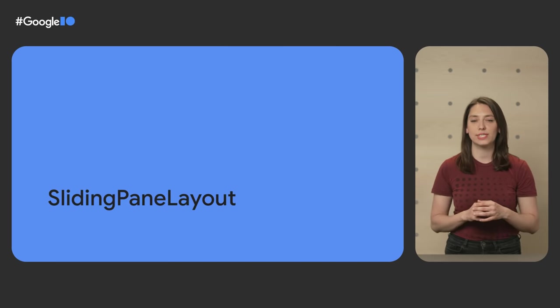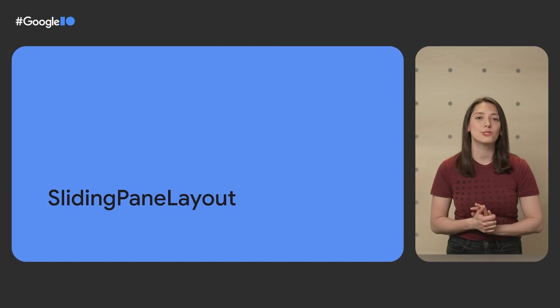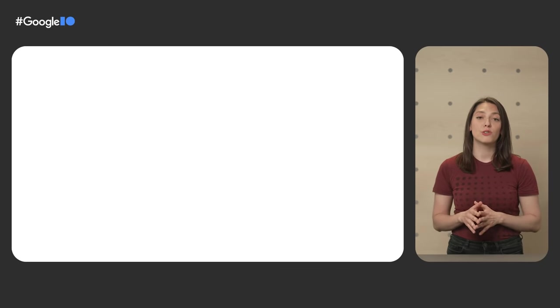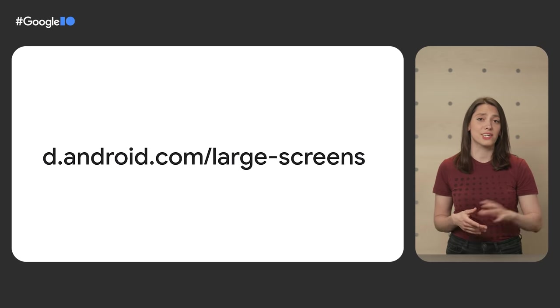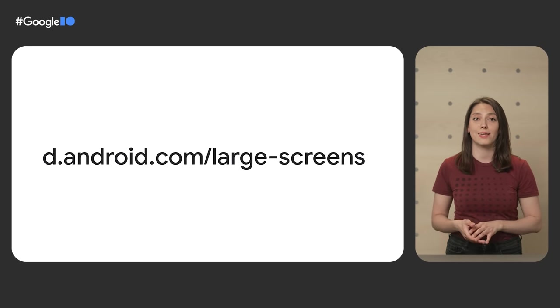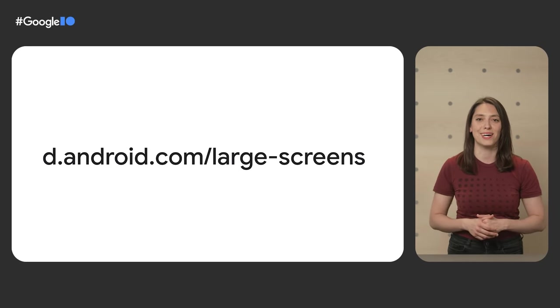A great first step for large screens is using sliding pane layout to make better use of your screen real estate — and there's a workshop to show you how. To learn even more, go to developer.android.com/large-screens for topics like navigation, multi-window support, and migrating your app to adaptive UI.